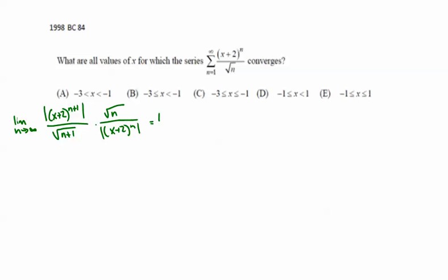Simplify that a bit. Limit as n approaches infinity of square root of n over (n+1) times absolute value (x+2)^(n+1) over (x+2)^n.